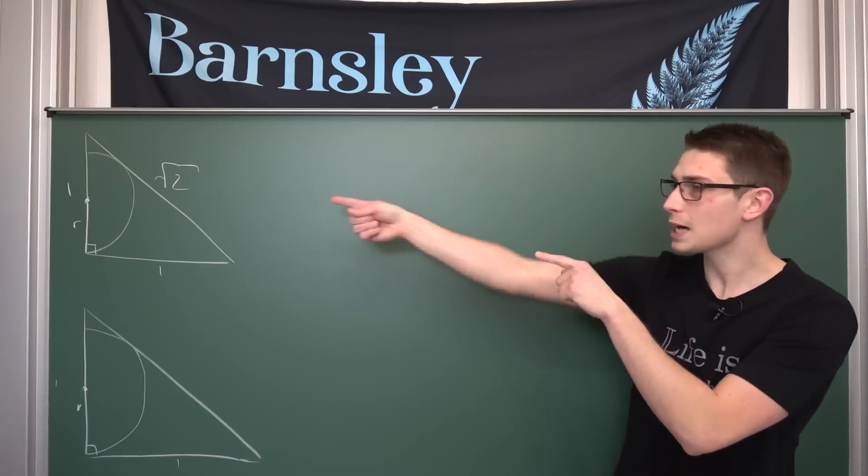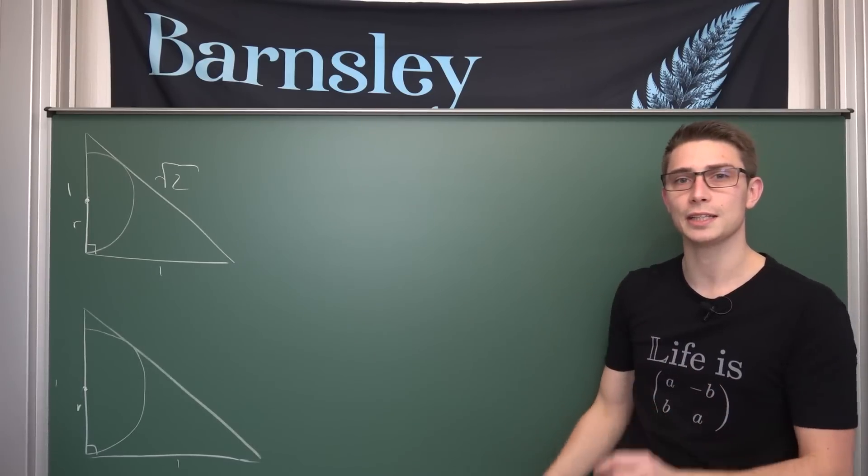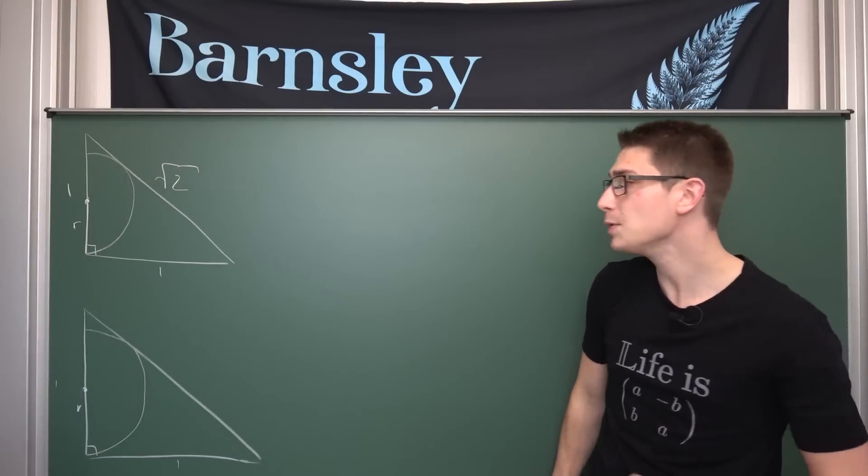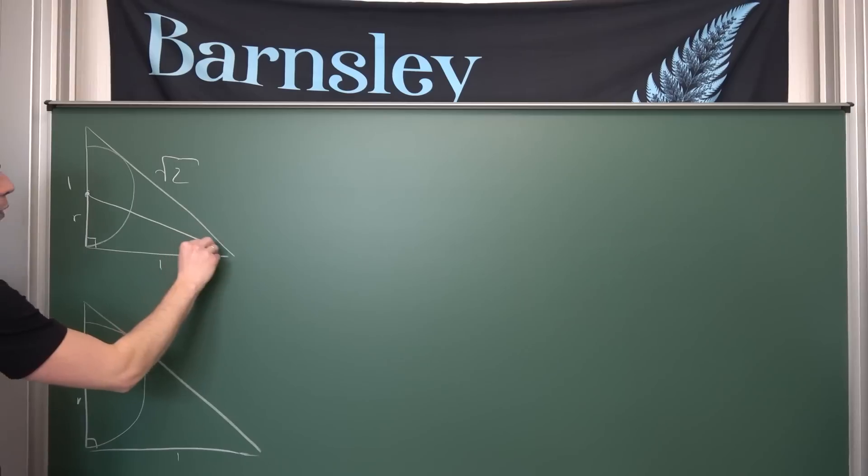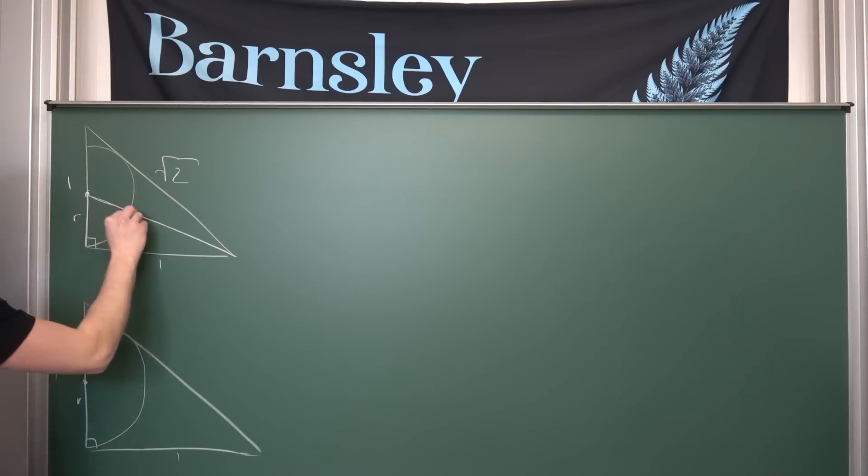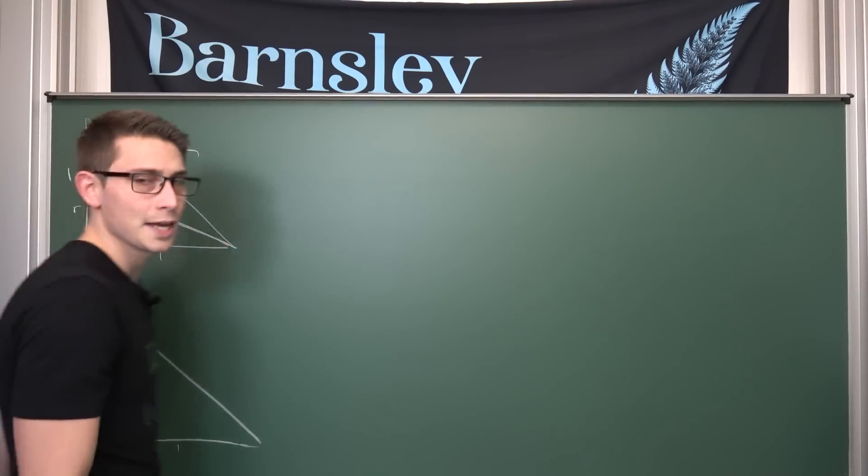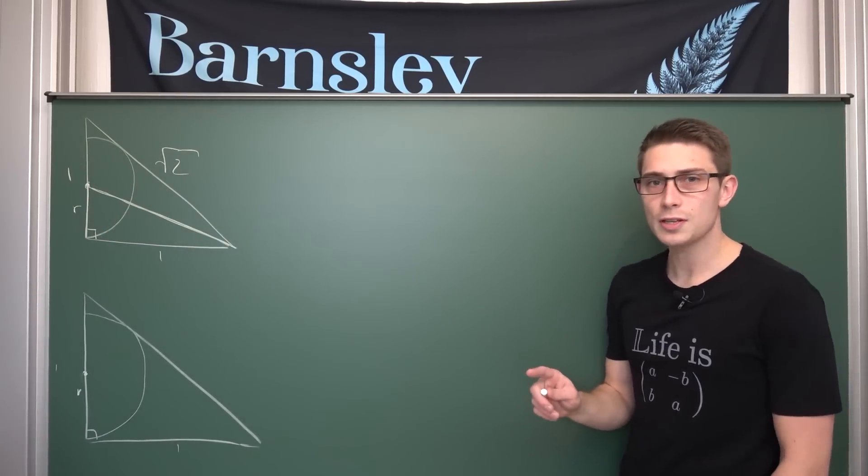For this, I would like to split up this triangle into 2 other triangles. Namely, I'm going to connect the midpoint, the center of the circle, with this very corner that we are going to have right here.